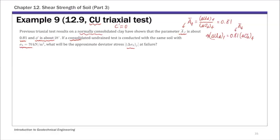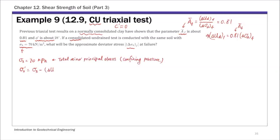We have the confining pressure sigma 3, which is 70 kPa. The total minor principal stress is also the confining pressure in a triaxial test. The effective minor principal stress sigma 3 prime equals sigma 3 minus the excess pore water pressure at failure, delta u_df. Since delta u_df equals 0.81 times the deviator stress, we substitute that into the sigma 3 prime expression, giving sigma 3 prime in terms of delta sigma_df.